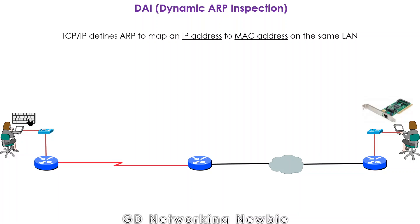In this video we are going to discuss about DAI, that stands for Dynamic ARP Inspection. This idea is very important from a network security point of view, and it is based on ARP — the Address Resolution Protocol. Before discussing DAI, let's briefly discuss about ARP.